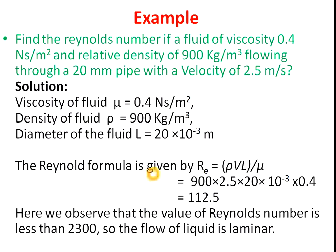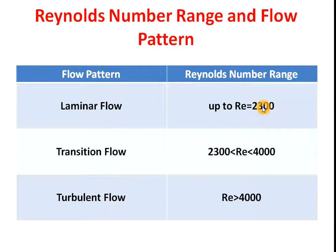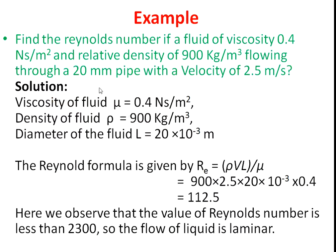Let's calculate the Reynolds number with an example. A fluid with viscosity 0.4 Newton·s/m², density 900 kg/m³, is flowing through a 20 mm pipe with a velocity of 2.5 m/s. Using the formula Re = (rho × V × L) / mu, substituting all values, we get Re = 112.5. Since this value is less than 2300, we can conclude that the flow is laminar.